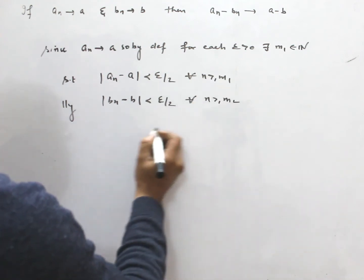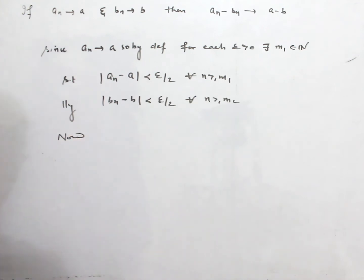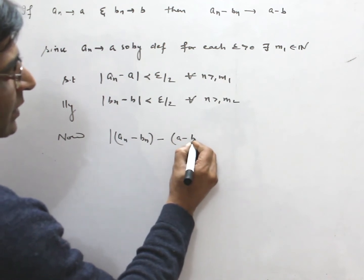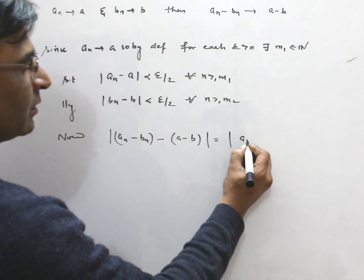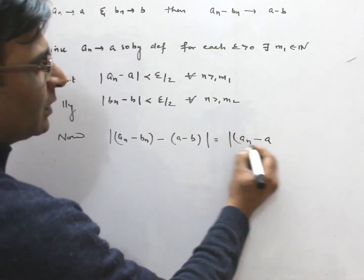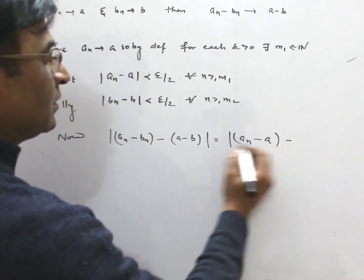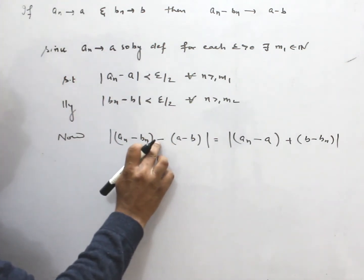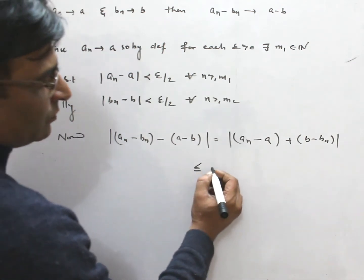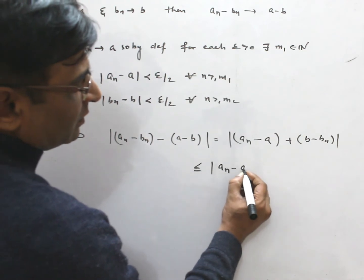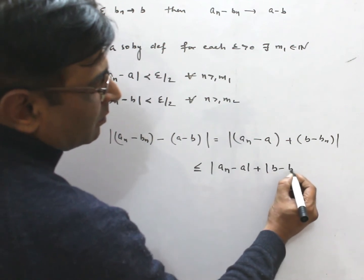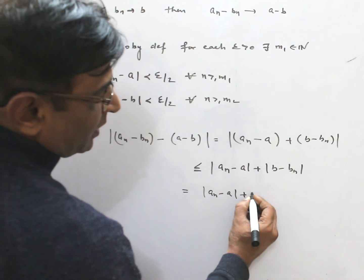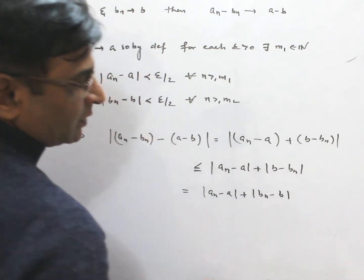Now, |aₙ - bₙ - (a - b)| can be written as |(aₙ - a) + (b - bₙ)|. By the triangle inequality, this is less than or equal to |aₙ - a| plus |b - bₙ|.